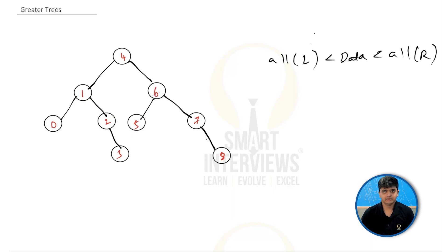How do we solve this problem exactly? In the problem statement, it is given that you have to find, for every node, you have to find the sum of all the elements which are greater than the current node and put that value in the value of the current node. Whatever the sum you get, you have to put it in the value of the current node.